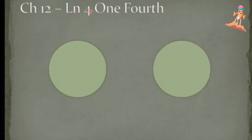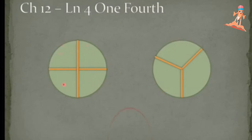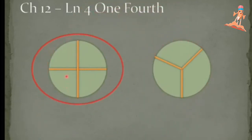Lesson 4: One Fourth. I am dividing this shape like this, and this shape we are dividing into four parts. Now this one has three parts, and this one also has three parts, but this one has four equal parts.